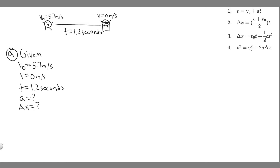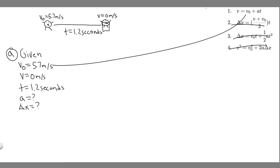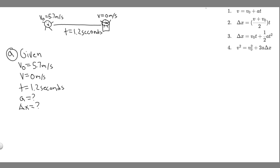Let's start with Part A. Looking at the kinematic equations, we need to find which one to use to solve for acceleration. We're given V₀, V, and T. Equations 2 through 4 all contain delta X, so we won't use those. Equation 1 contains V, V₀, and T — so we can solve for A since it's the only unknown. We'll use V equals V₀ plus A times T, and since all values are in correct units, we can just plug in and solve.